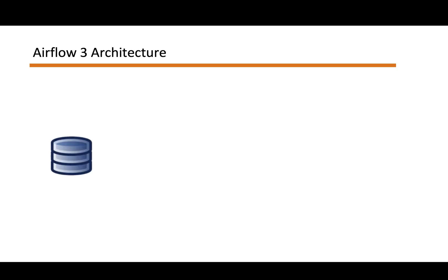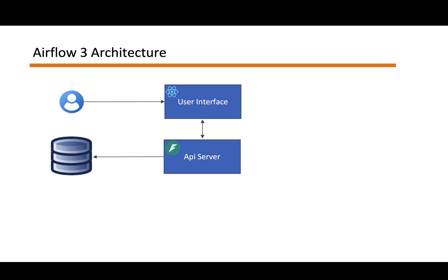Talking about the Airflow 3 architecture: you start with the database, and then you have an API server. This API server is the new component, written completely from scratch — it replaces the old web server. It fronts the database directly and also provides the user interface plus a REST API interface.